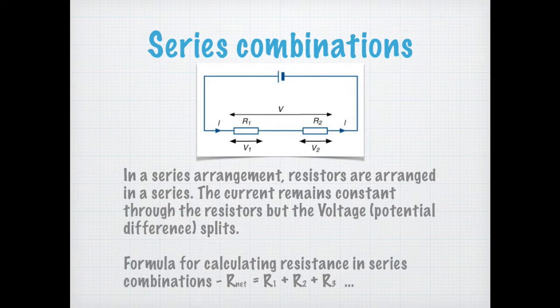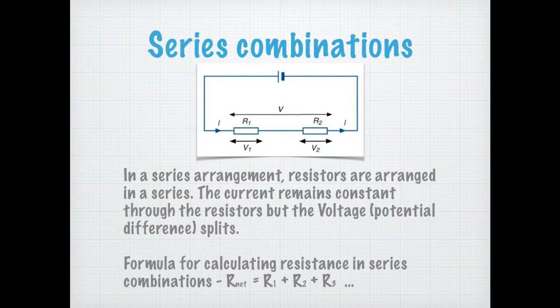What is the formula for calculating resistance in a series combination? The total resistance in a series combination is the sum of the resistances of all the resistors in that combination.